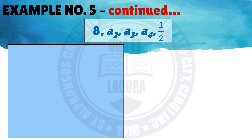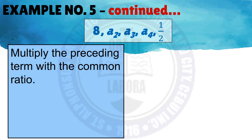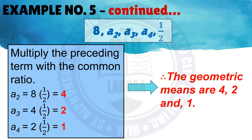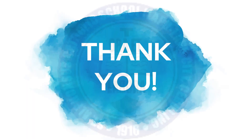To find the geometric means, multiply each preceding term by the common ratio 1 half. For a sub 2: 8 times 1 half equals 4. For a sub 3: 4 times 1 half equals 2. For a sub 4: 2 times 1 half equals 1. Therefore, the three geometric means are 4, 2, and 1. That ends our discussion on geometric means.